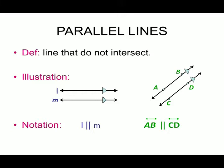Here one illustration is given where line L and line M are not meeting or not intersecting, so they are parallel lines. Another example is line AB and line CD, which are also not intersecting, meaning they are parallel. The notation is written as L parallel to M, and AB parallel to CD.